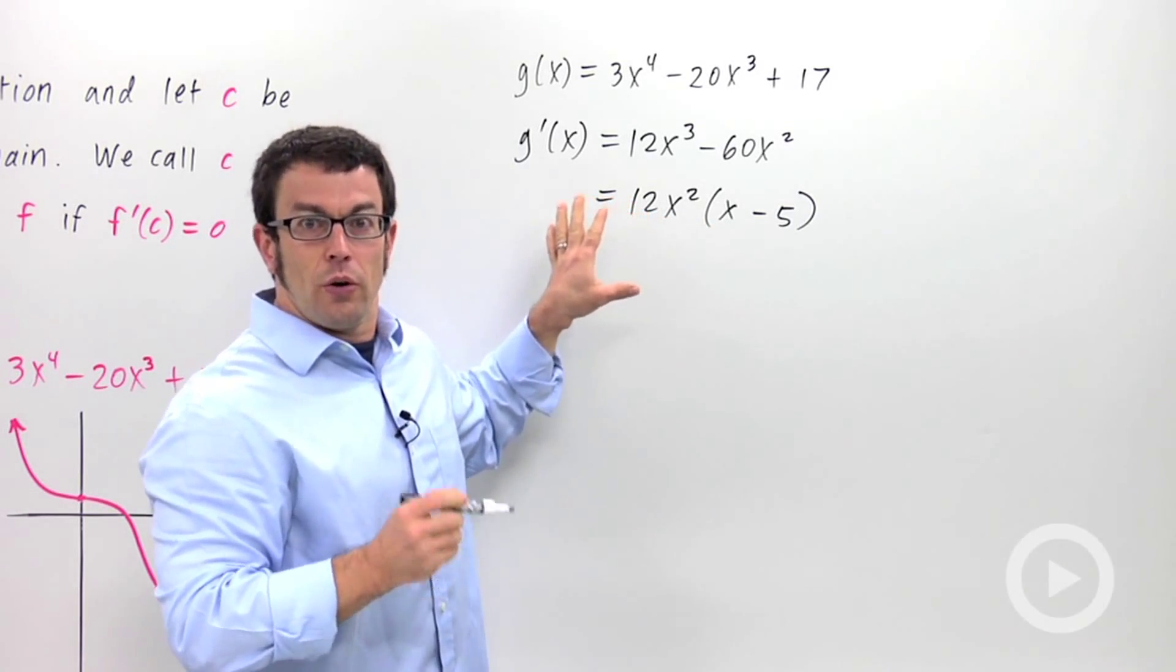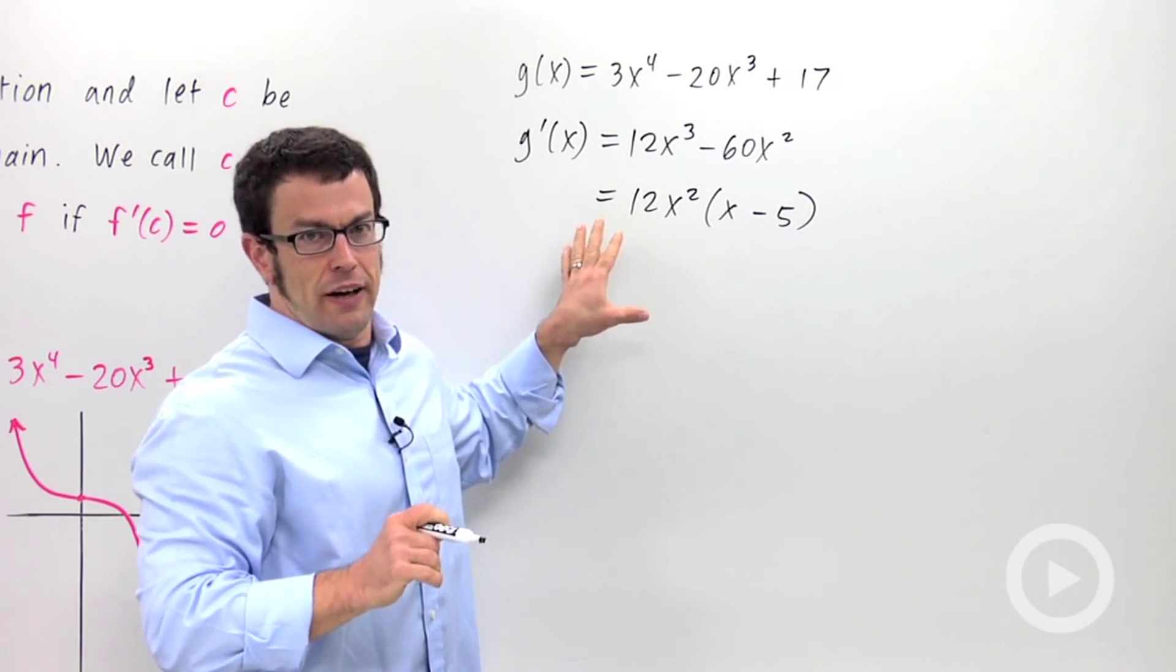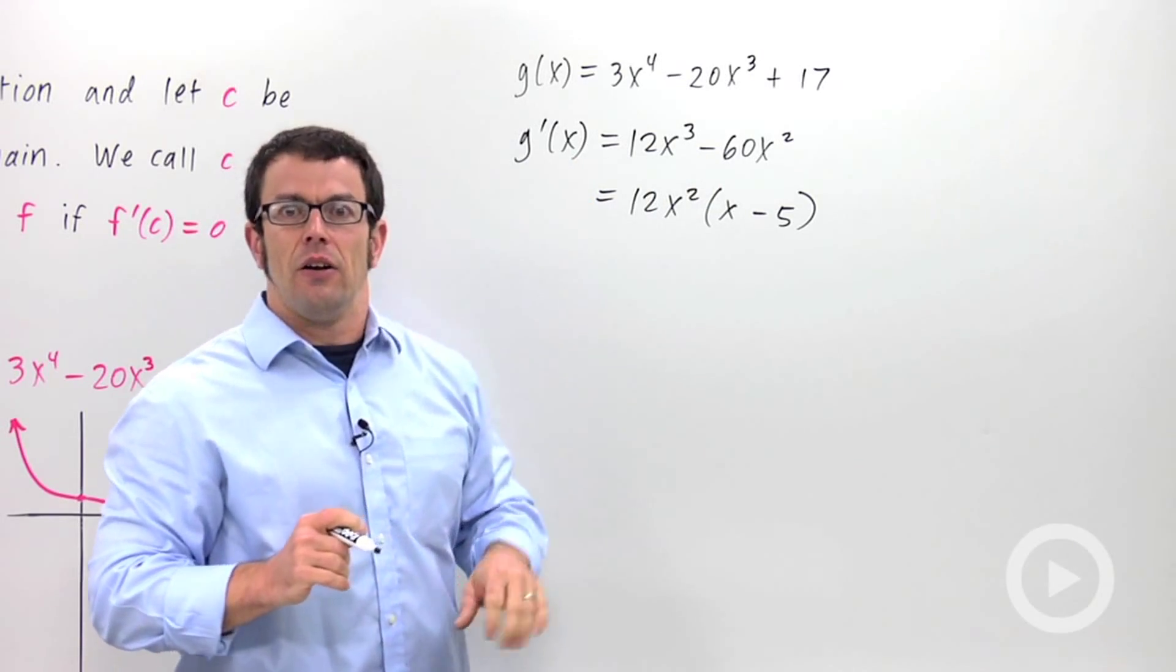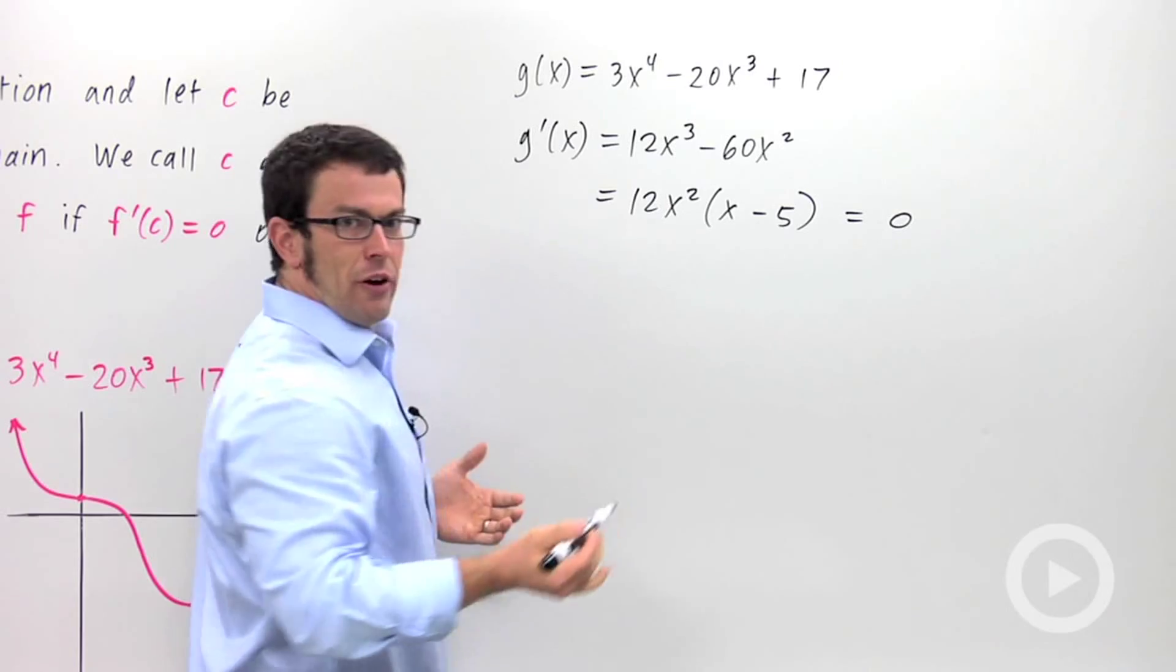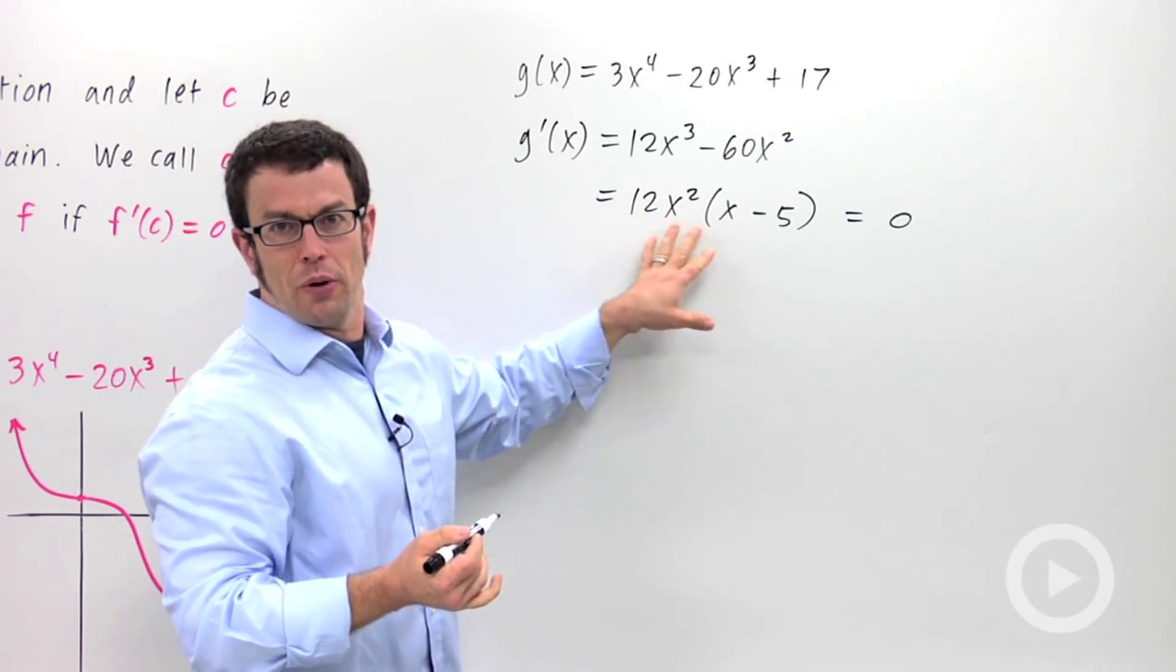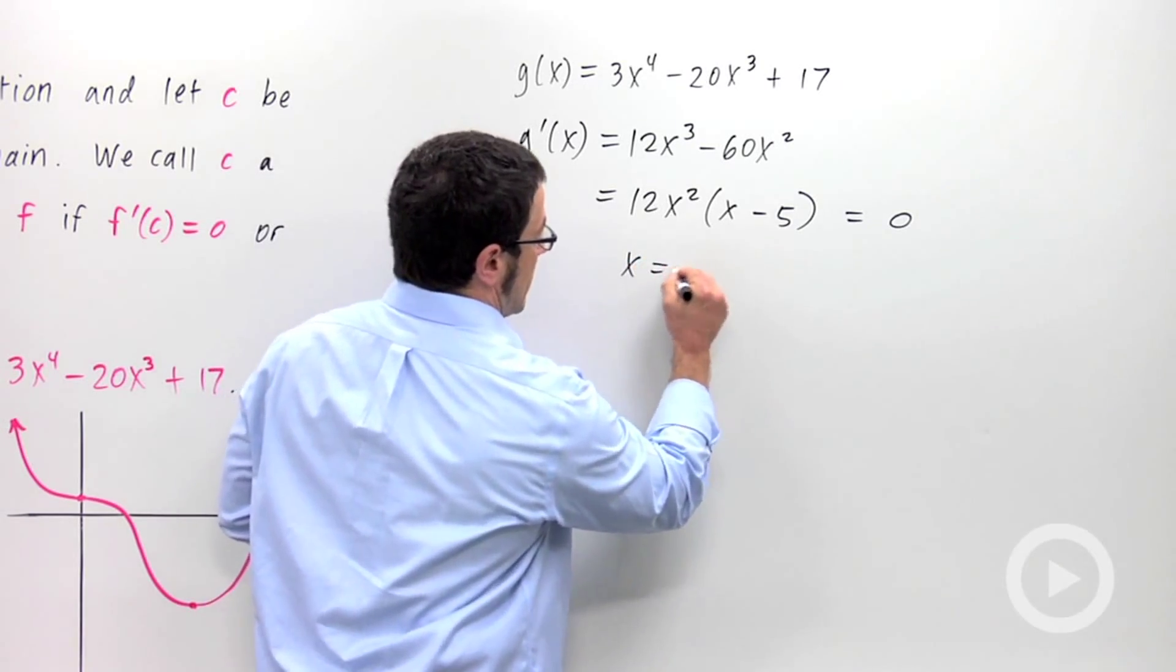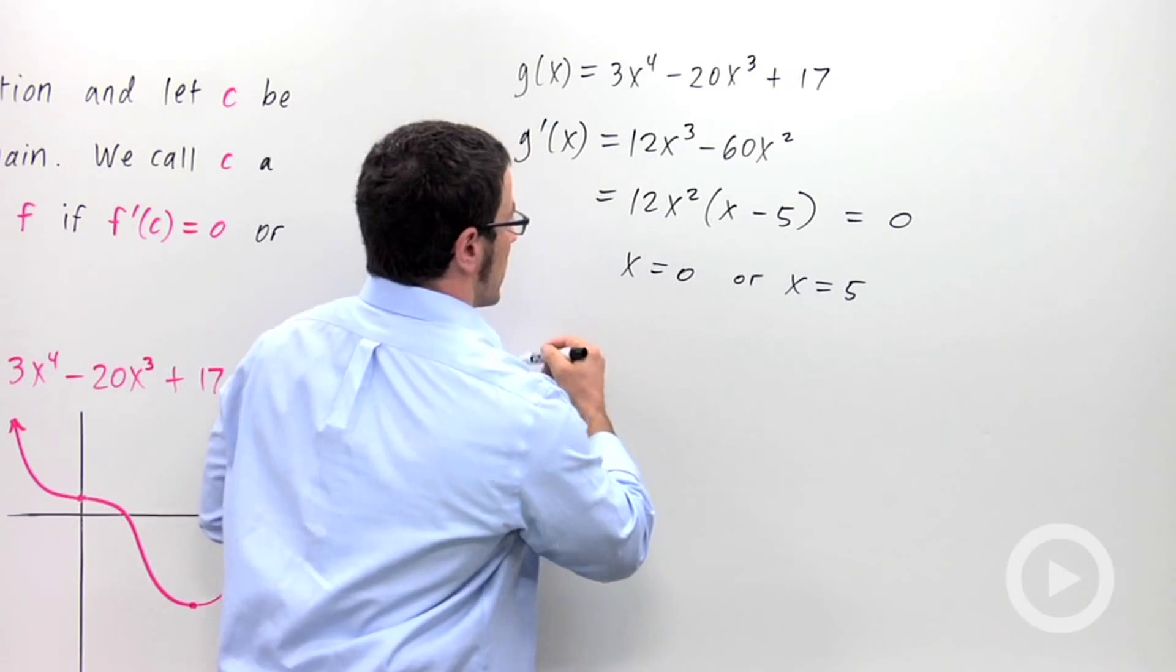Now remember, I want to look for critical points. And critical points are where the derivative equals 0 or where it's undefined. Now this derivative is never undefined. So I need to find where it's 0. So I set it equal to 0 and solve for x. And this is really easy because it's already factored, and that's why I factored it. So that tells me that x equals 0 or x equals 5. These are the two critical points.